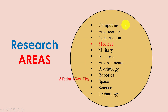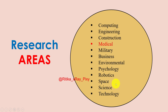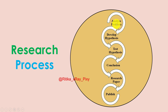Research areas include computing, engineering, construction, medical, military, business, environment, psychology, robotics, space, science and technology. There are significant differences in how research papers are written across these fields. However, in whatever field you are in, the rules of good research paper writing are the same: the paper should be clear, logical, and provide a high level of readability.